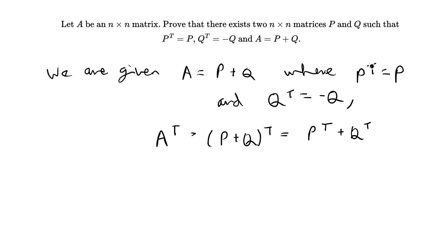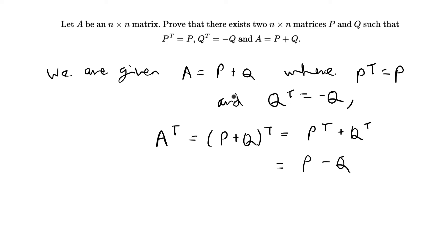We know that P transpose equals P and Q transpose equals negative Q, so we can write Aᵀ equals P minus Q. So now we have two equations: A equals P plus Q, and A transpose equals P minus Q. From here we can solve for both P and Q using these two equations.